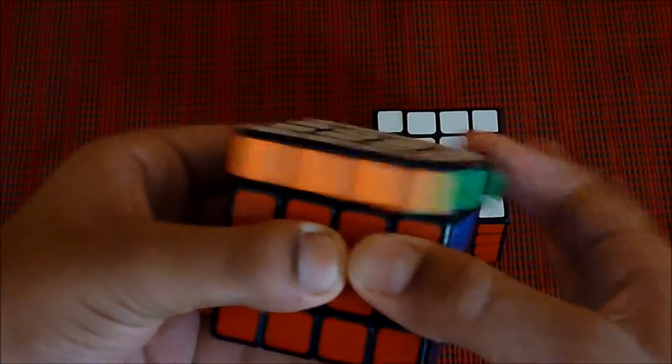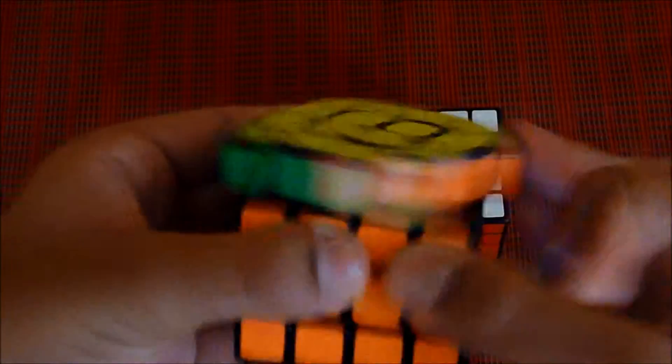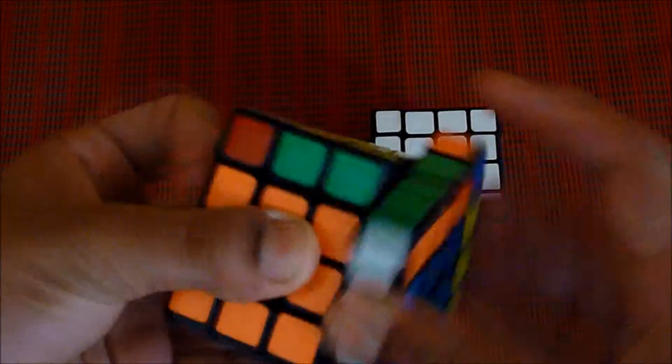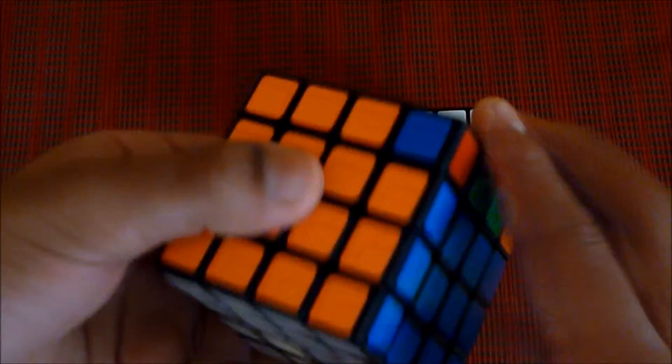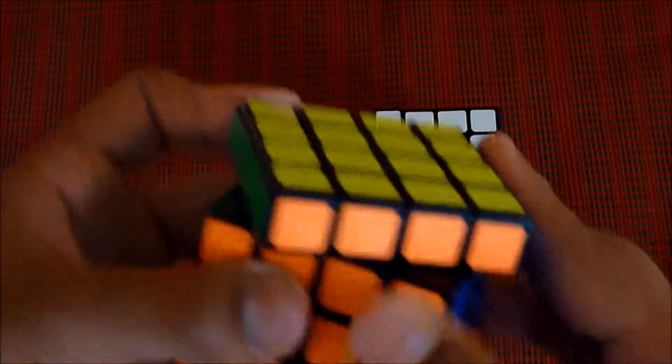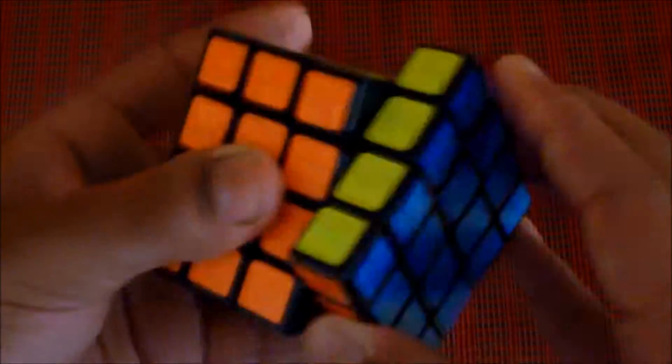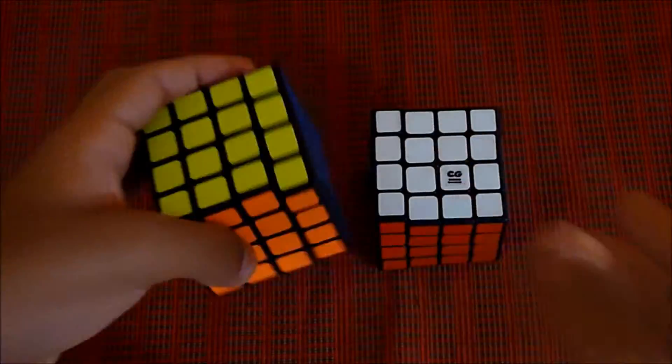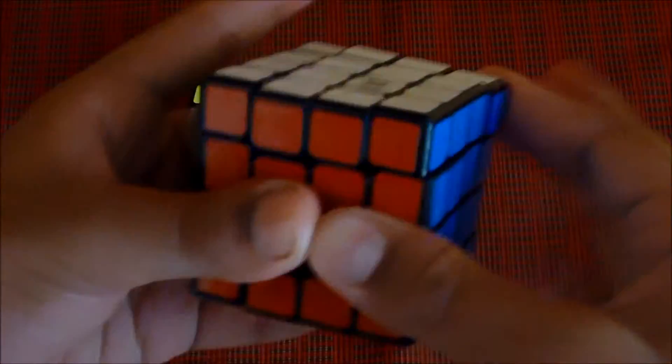So this is the Moyu Aosu. It is a standard sized 4x4 from Moyu and it's their latest version. It's very fast and corner cutting is about that much, and this is the Mini Aosu.